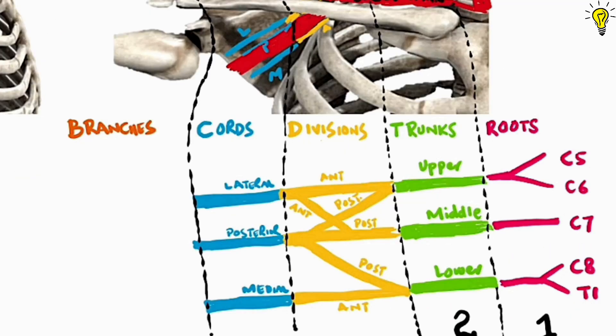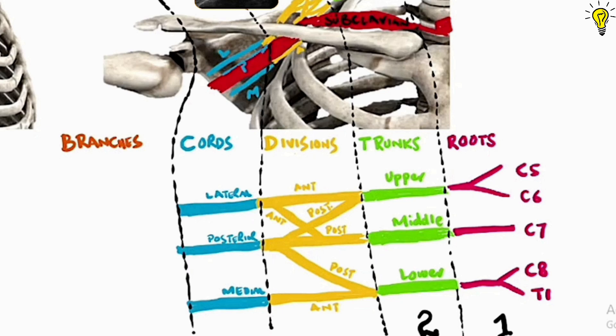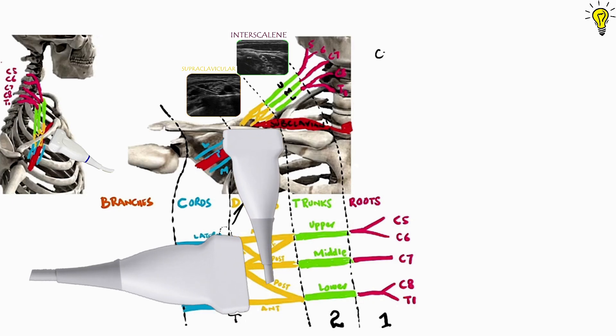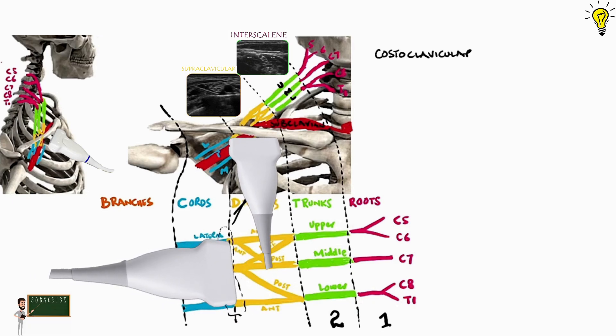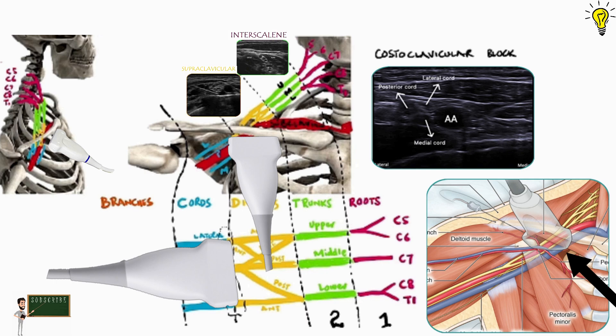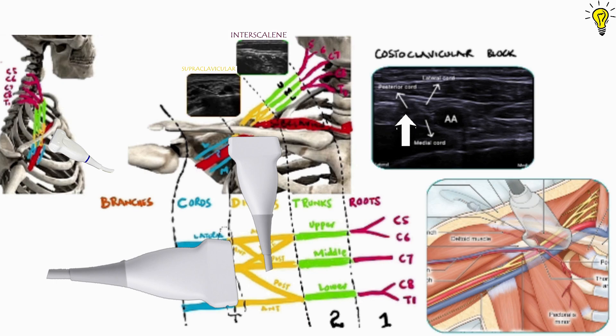Now there are two windows to exploit via ultrasound to target the cords. Firstly and relatively newer technique is the costoclavicular blocks. Just at the point of divisions forming cords, before the cords have moved in their respective directions to the artery, they are still clustered together behind the artery below the clavicle near costochondral joint. So placing the probe here shows us this image. You can clearly see the lateral, medial and posterior cords together behind the artery.